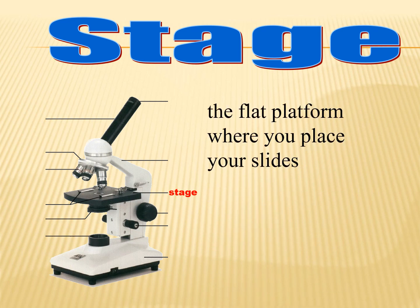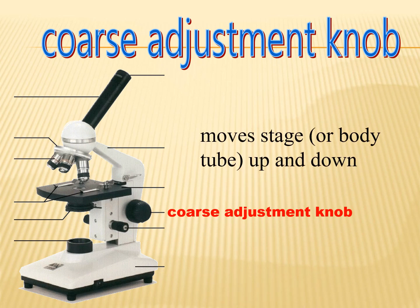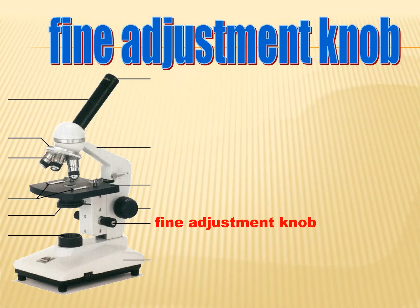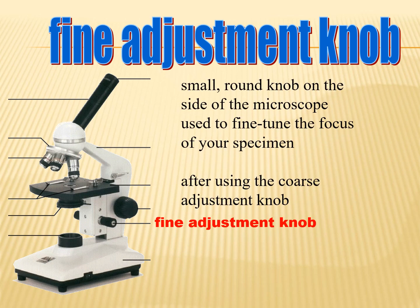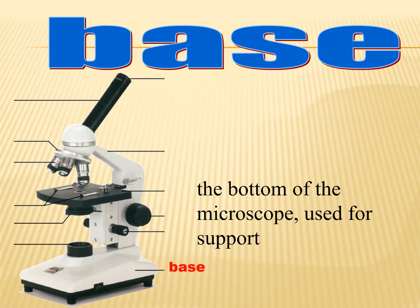The stage is the flat platform where you place your slides. The coarse adjustment knob moves the stage or body tube up and down. The fine adjustment knob is a small round knob on the sides of the microscope used to fine-tune the focus of your specimen — it is used after the coarse adjustment knob. The base is located at the bottom of the microscope and is used for support.